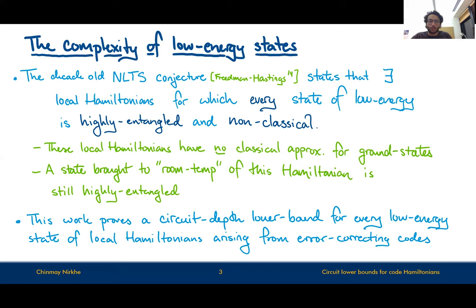More specifically, we're going to use the notion of circuit depth as a measure of entanglement and non-classicality, or more generally complexity. What we will show is a circuit depth lower bound for every low energy state for a certain family of local Hamiltonians. The family of local Hamiltonians we'll be interested in arise from error correcting codes. So you might look at this talk from an interest in error correction or coding theory, or from a more general quantum complexity perspective, and I hope people from both crowds gain something.